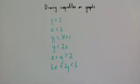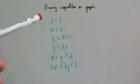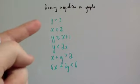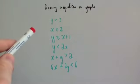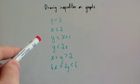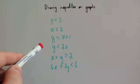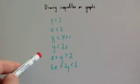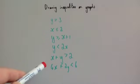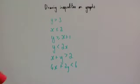In this video we're going to look at graphical inequalities — drawing inequalities on graphs. We've got six inequalities to draw: y is bigger than 3, x is less than or equal to 2, y is bigger than or equal to x plus 1, y is less than 2x, x plus y is bigger than 2, and 4x plus 2y is less than 6. Before you watch the rest of the video, I highly recommend you watch the video on drawing linear graphs to refresh yourself on that topic.